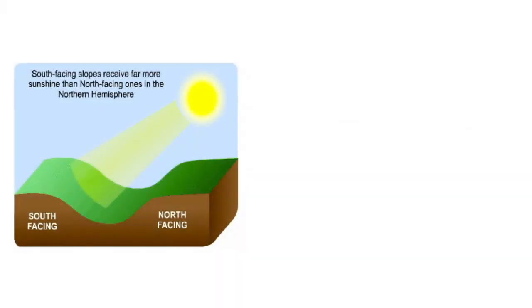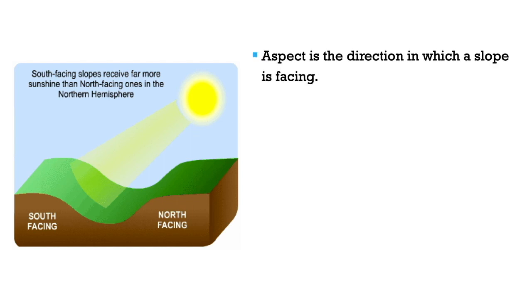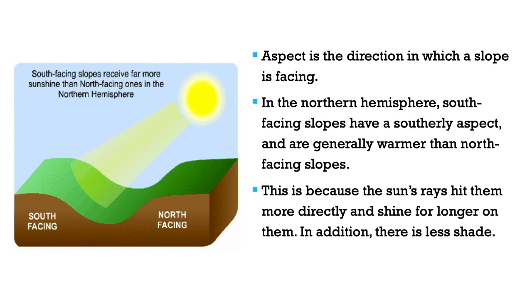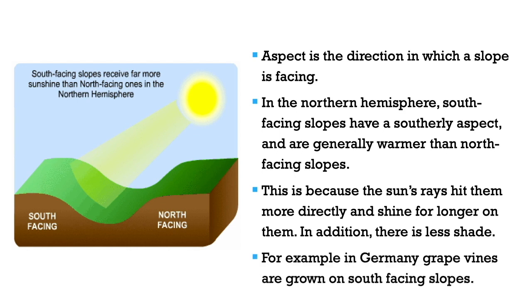Aspect refers to the direction in which a slope is facing. In the northern hemisphere, south-facing slopes tend to be warmer than north-facing slopes because the sun's rays hit them more directly and shine for a longer period of time, with less shade. For example, in Germany, grapevines are grown on south-facing slopes.